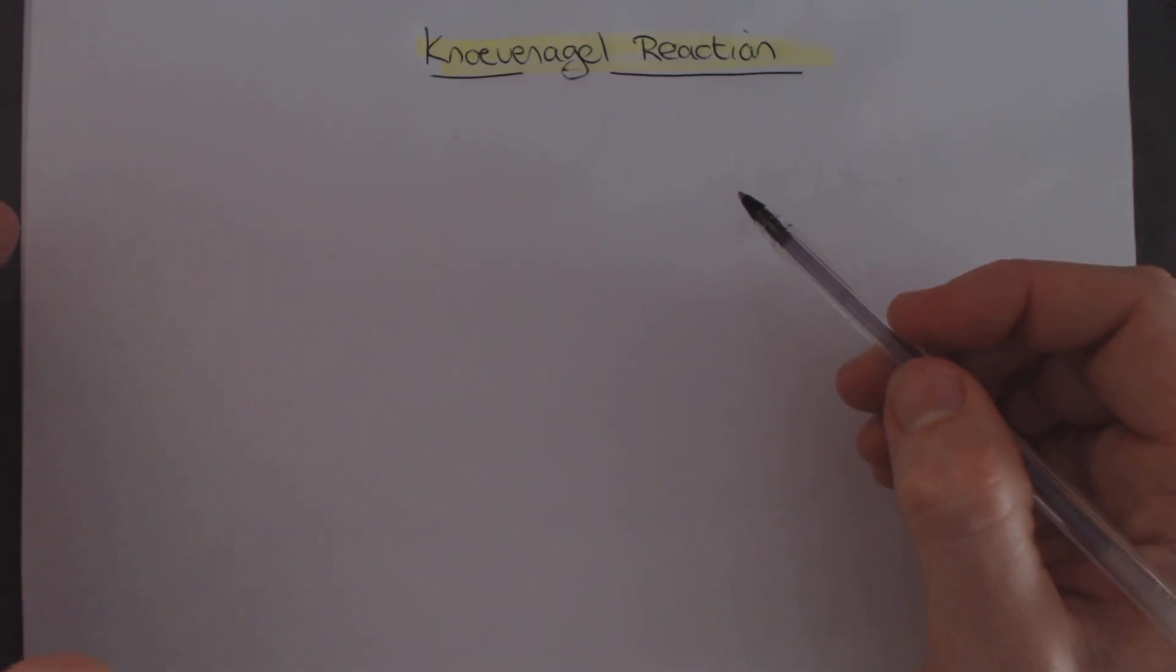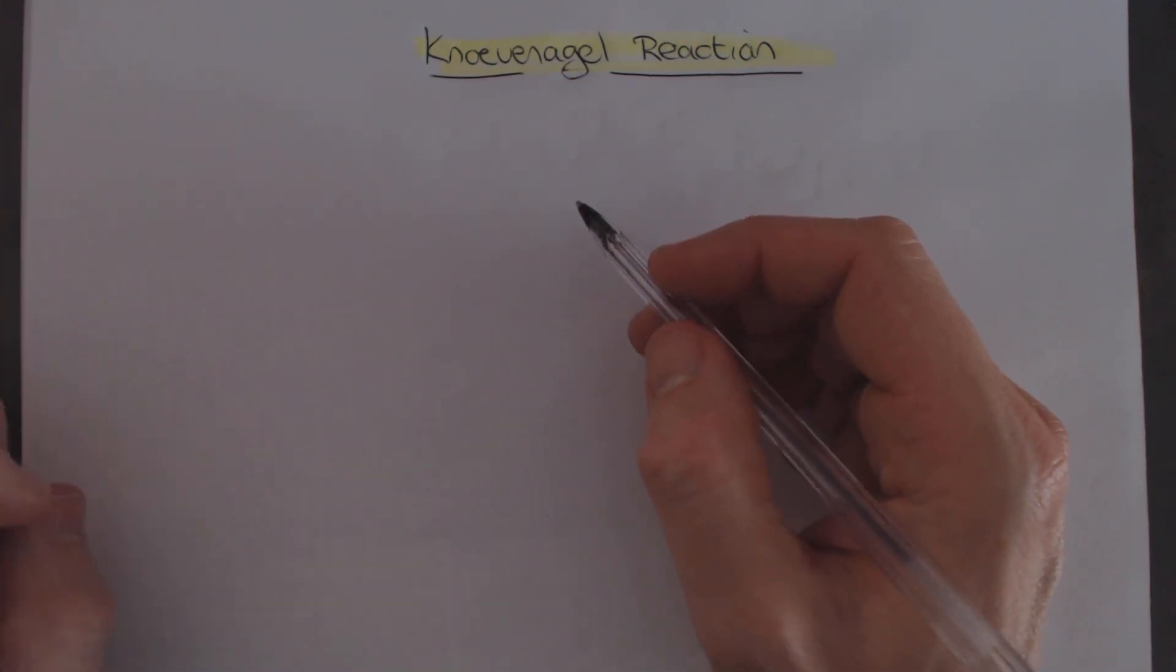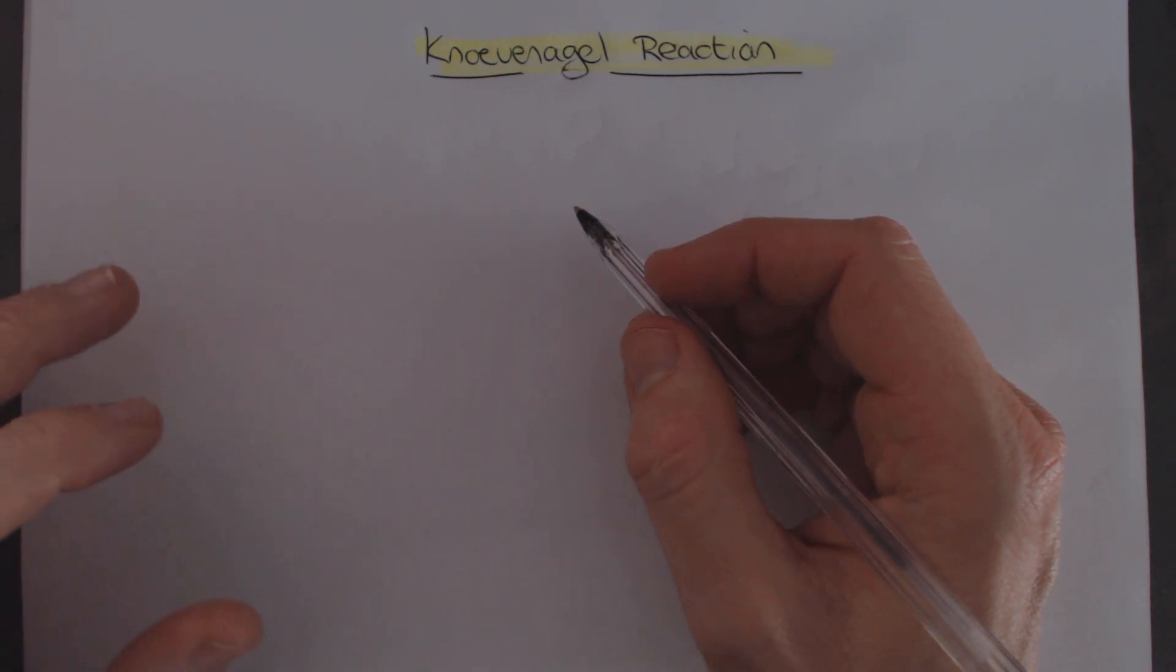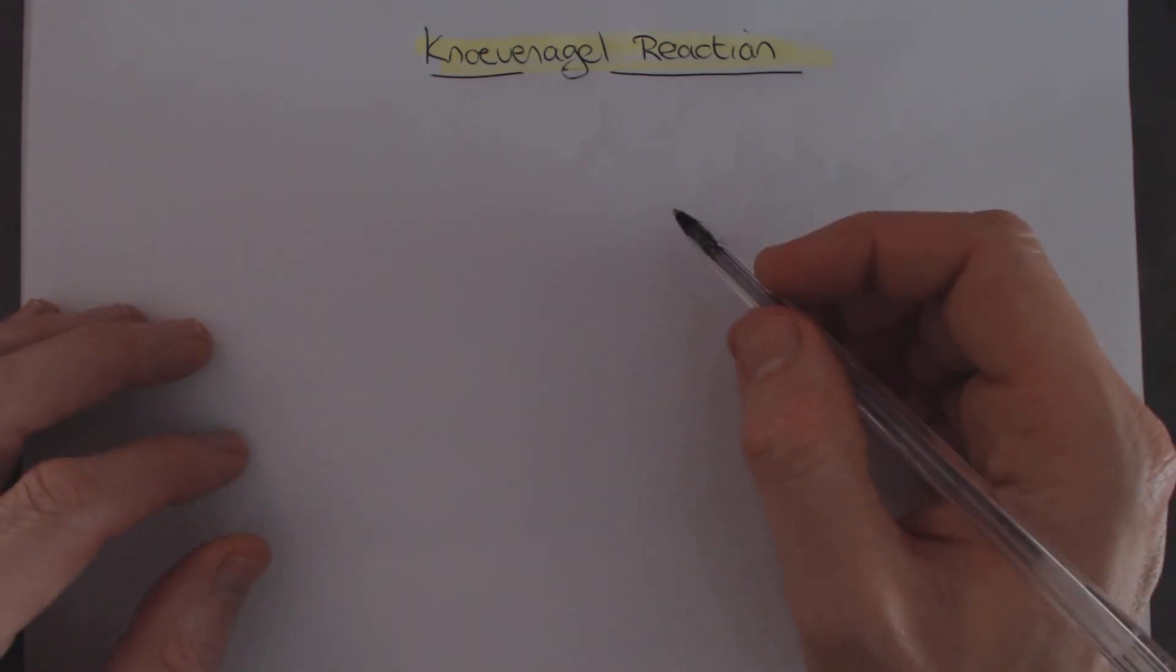So we've spoken about aldol condensations and we've spoken about cross aldol reactions, and what we've been working with there is just simple aldehydes and ketones. You can also do them with an ester.